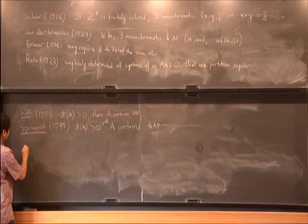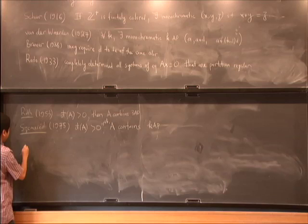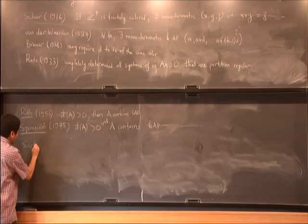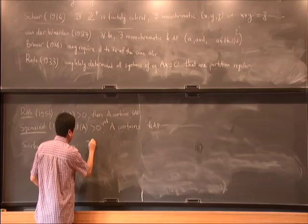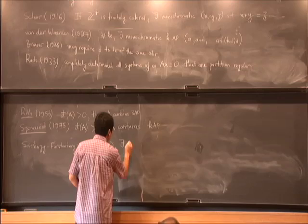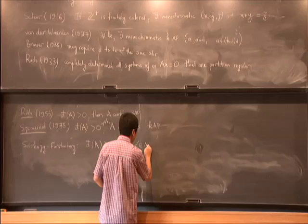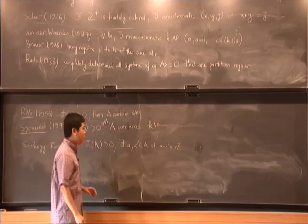Just a couple of other results about sets of positive density. It is a fact discovered independently by Sarkőzy and Furstenberg: if you have a set of positive density, then you can find two distinct elements inside whose difference is a perfect square.